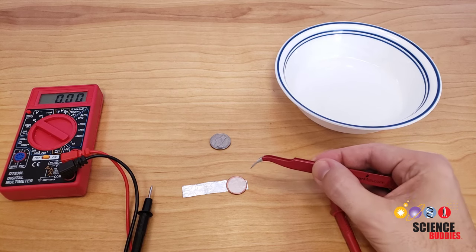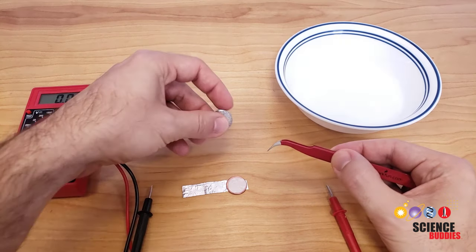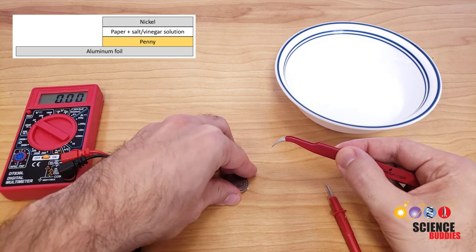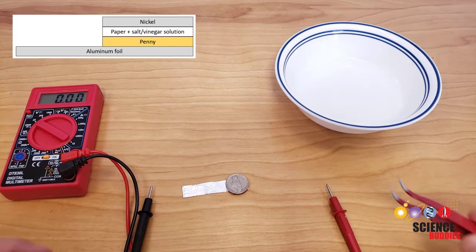Then take your nickel and place it on top of the paper circle. You have now completed one cell of your battery.